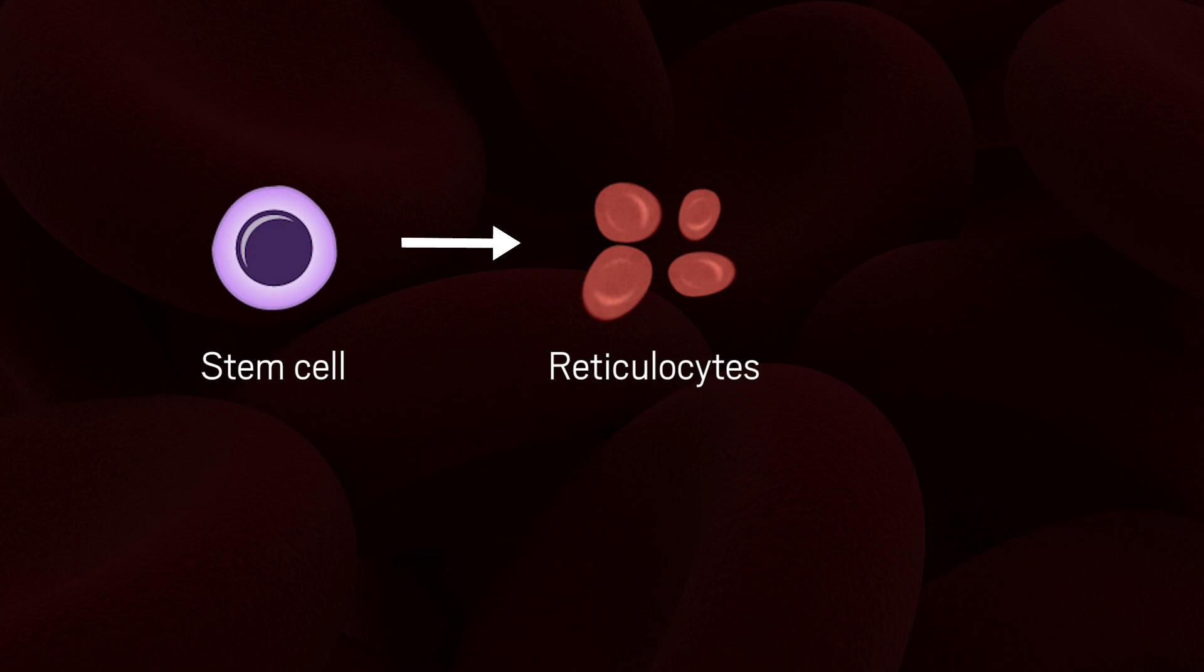What scientists get out, however, is a mix of cells and cell parts that includes the reticulocytes, but also cell nuclei and cells called erythroblasts.